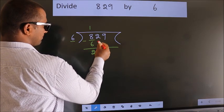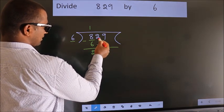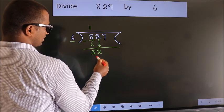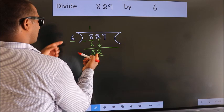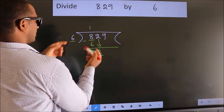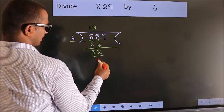After this, bring down the beside number, so 2 down, so 22. A number close to 22 in 6 table is 6 threes, 18.